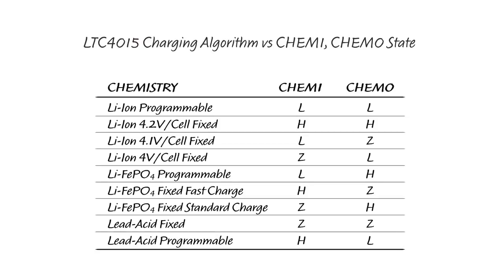The fixed algorithms are intended for designs that do not allow software control of the battery charging process. However, even the programmable algorithms are designed to rely on hardware checks to prevent software from causing battery safety issues. The hard-wired CHEM and cells pins ensure that the LTC4015 recognizes the type of battery it is charging, as well as how many battery cells it is charging. With this information, the device ensures that the charge algorithms never apply a voltage or current to a battery that would cause a safety concern.